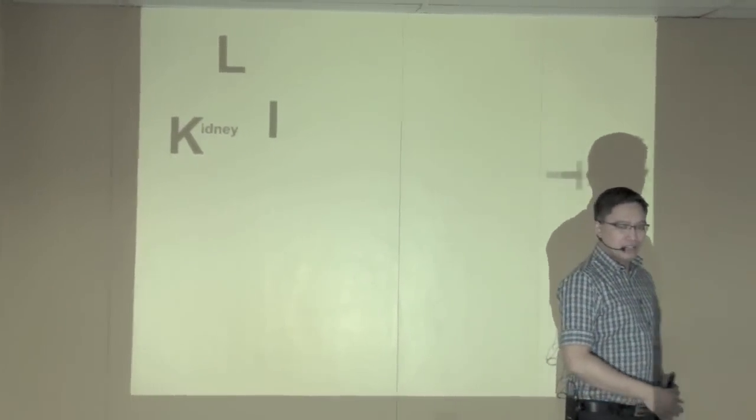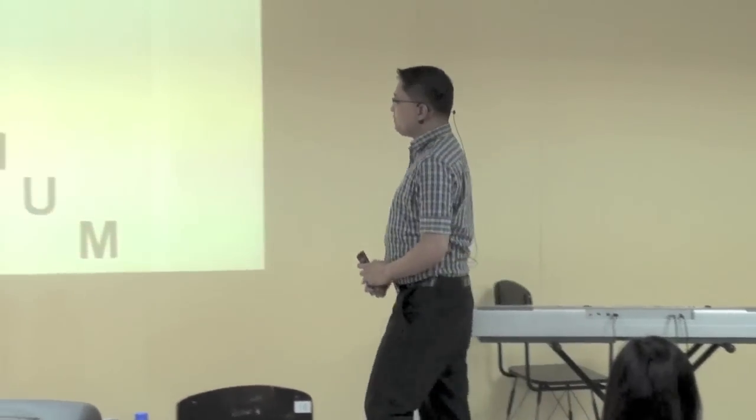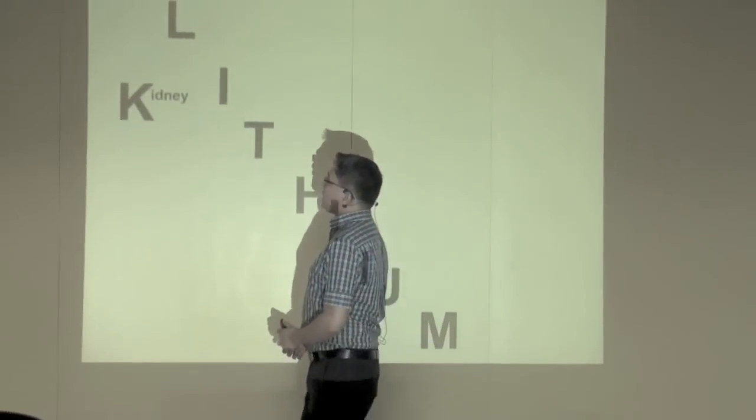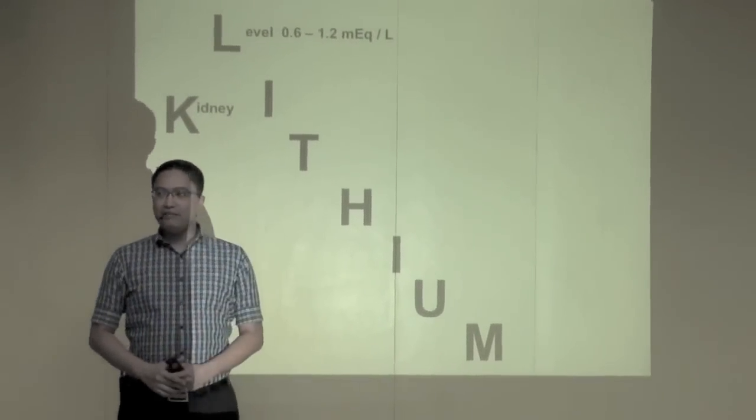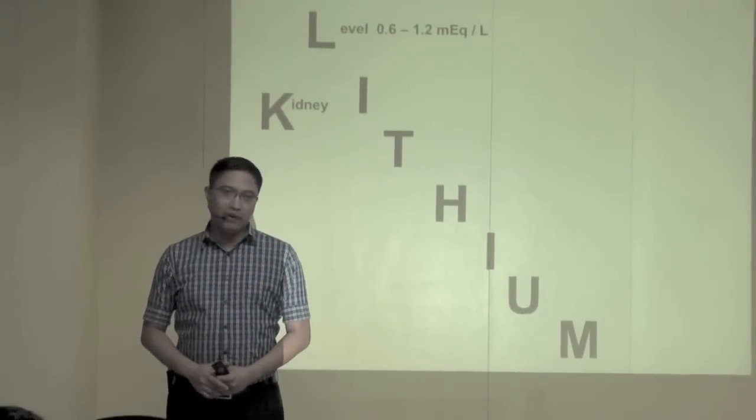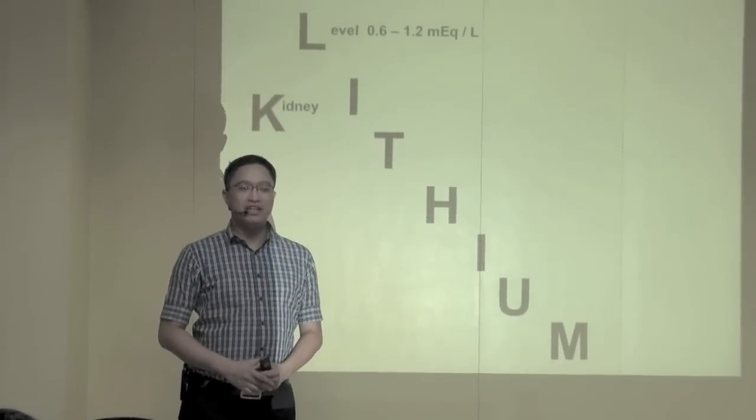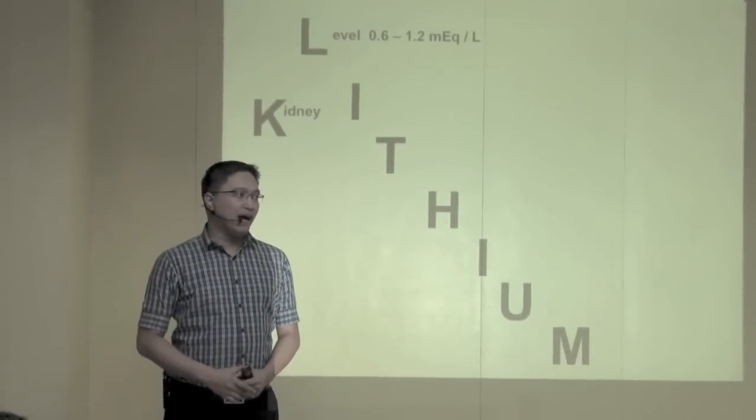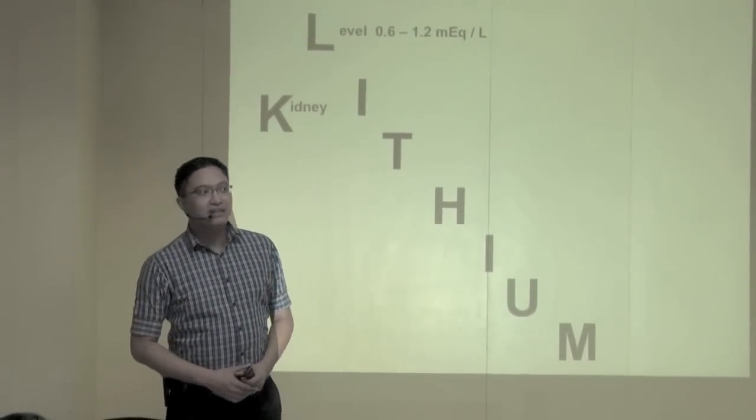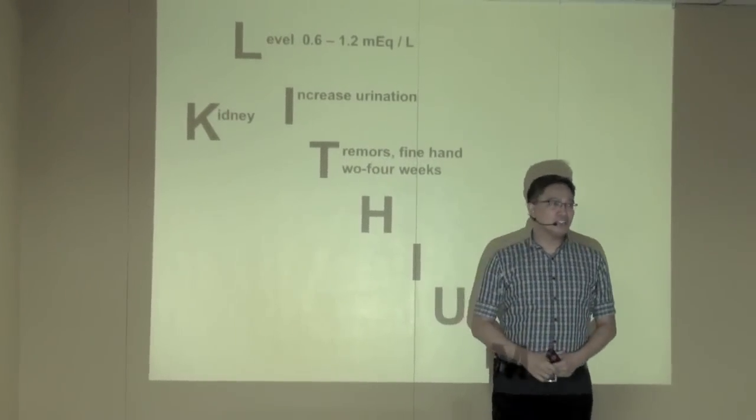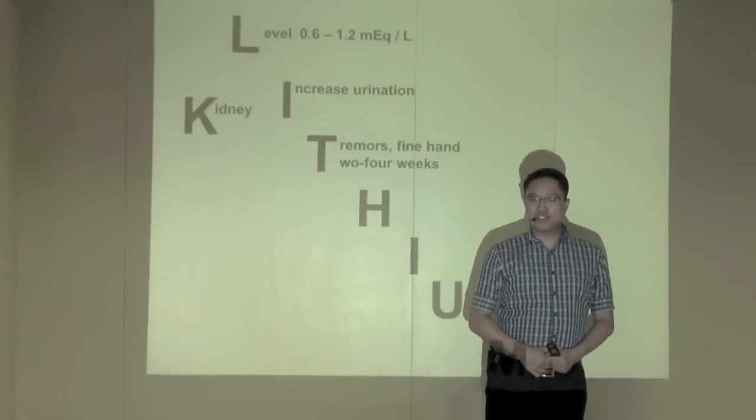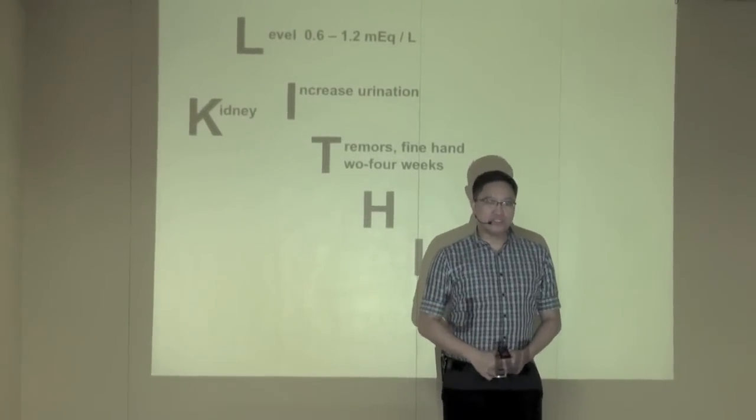In order to know everything about lithium, all you have to do is know the spelling of lithium. And after spelling lithium, let's begin with letter L. L stands for level. The normal level of lithium is 0.6 to 1.2. However, in other books, you might see 0.5 to 1.5. How long before lithium works? The answer is 2 to 4 weeks.